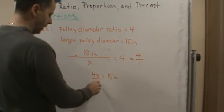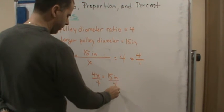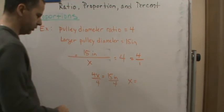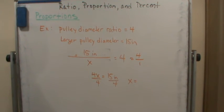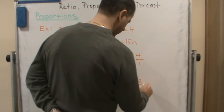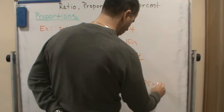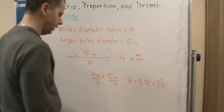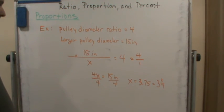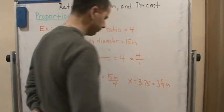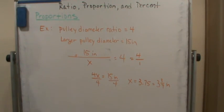And so if we divide both sides by 4, we get x is equal to 3.75, or 3 and 3/4 inches. And that's how you solve it.